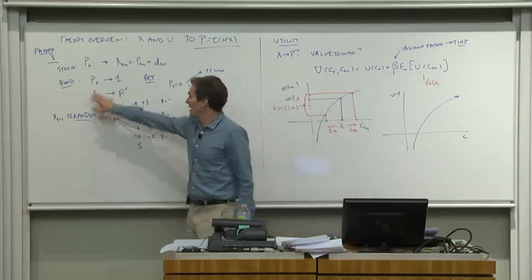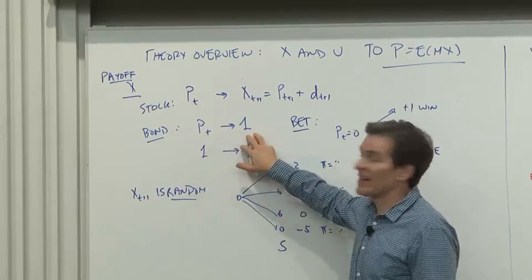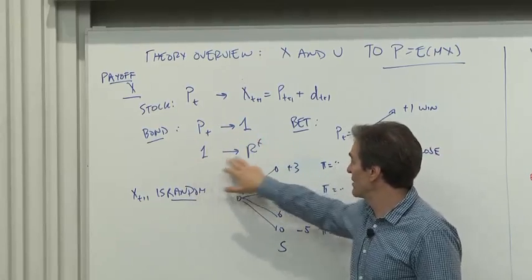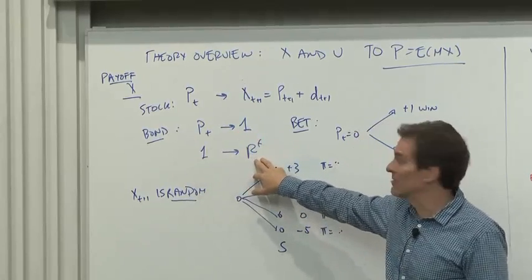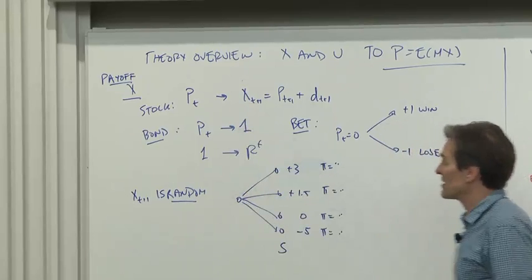If I buy a bond, I could pay a price p, which might be like 98 cents, and get a dollar for sure. Or I can invest a dollar and get the risk-free rate, that might be 1.03. So bonds also have a payoff just like stocks.